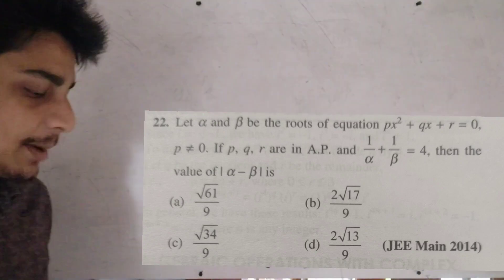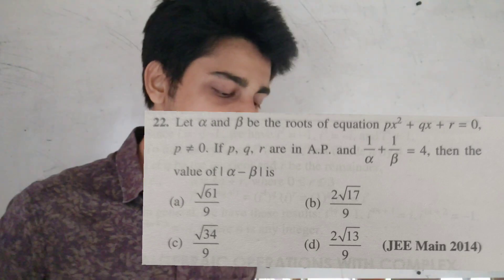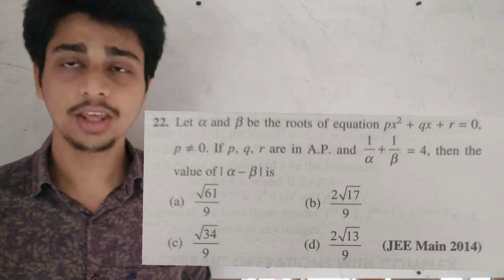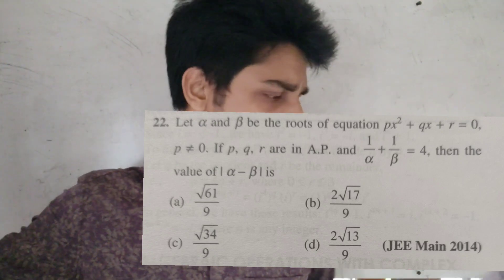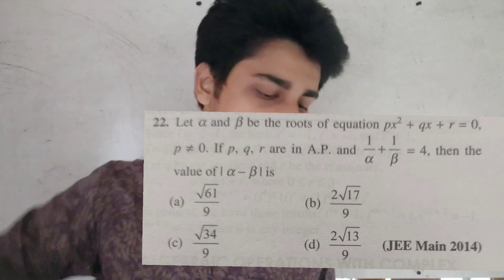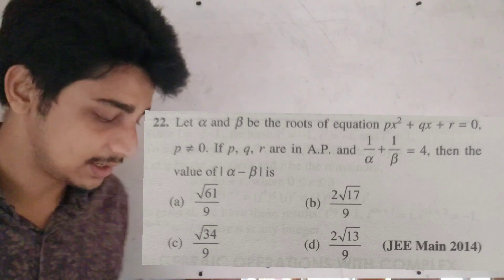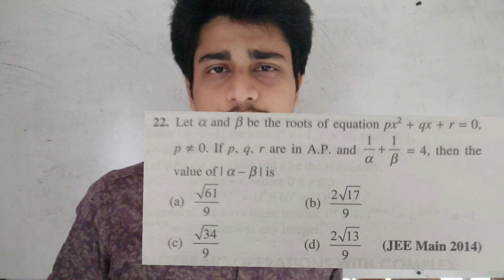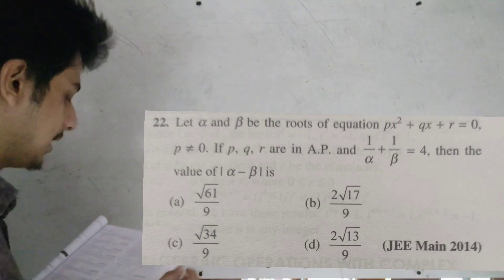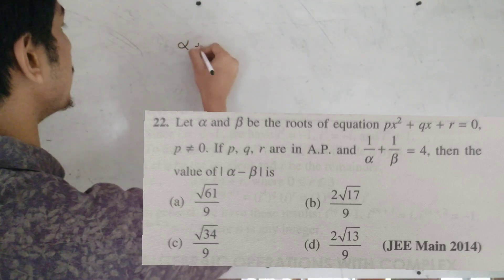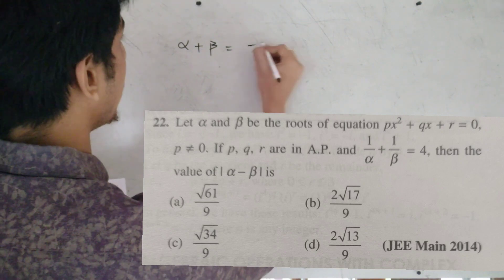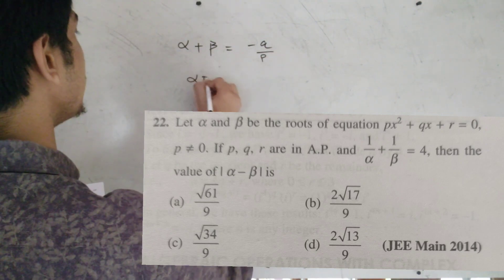Let α and β be the roots of PX² + QX + R = 0 such that P ≠ 0, with P, Q, R in arithmetic progression, and 1/α + 1/β = 4. Find the value of |α − β|. The sum of roots is α + β = −Q/P.